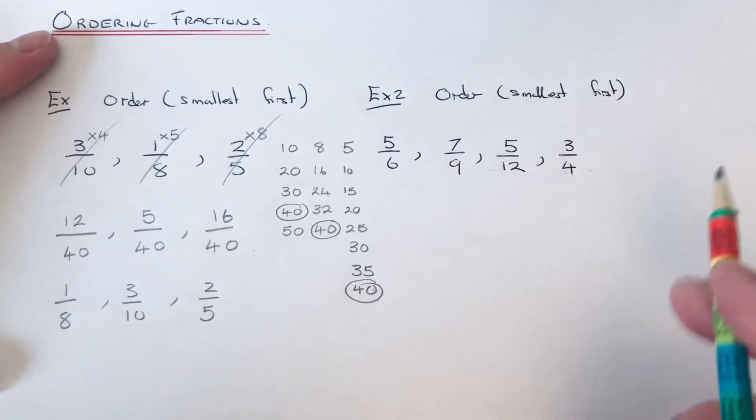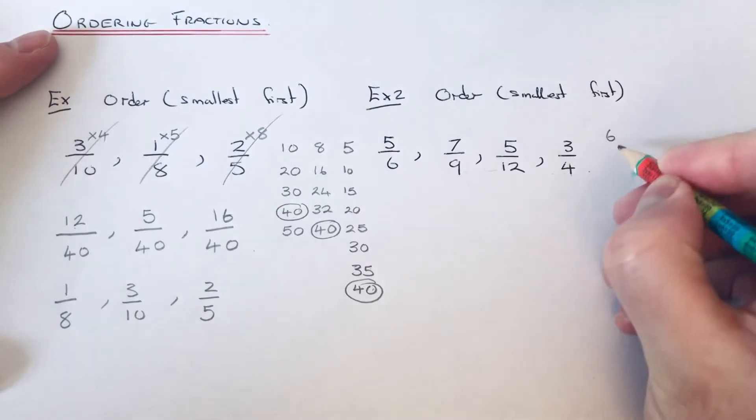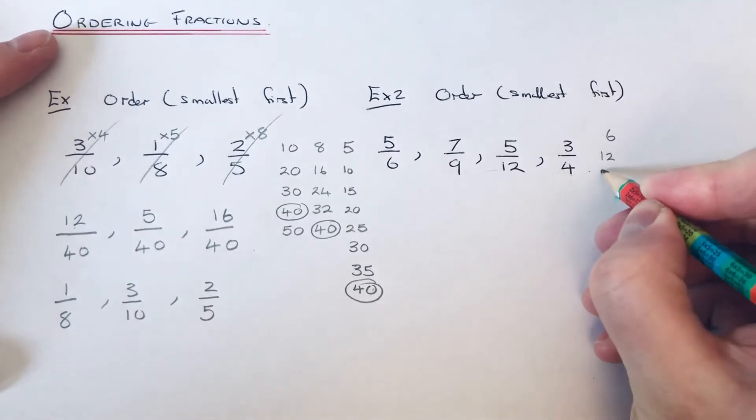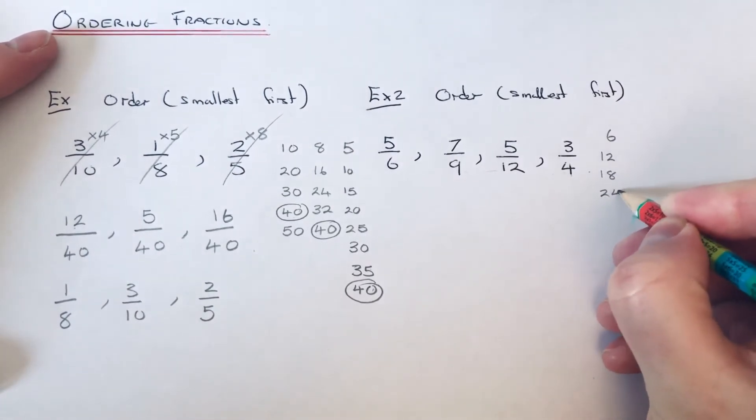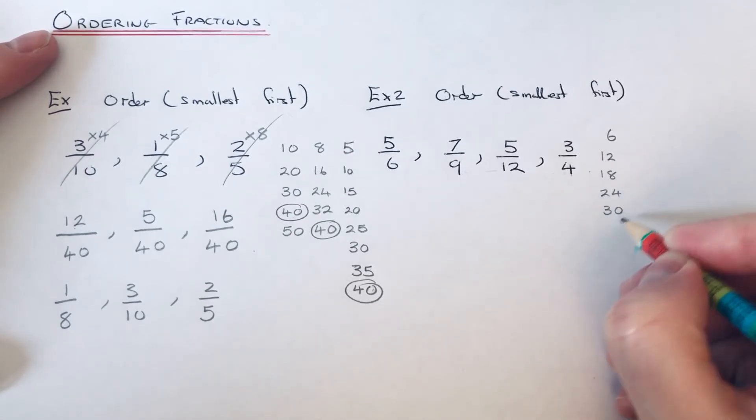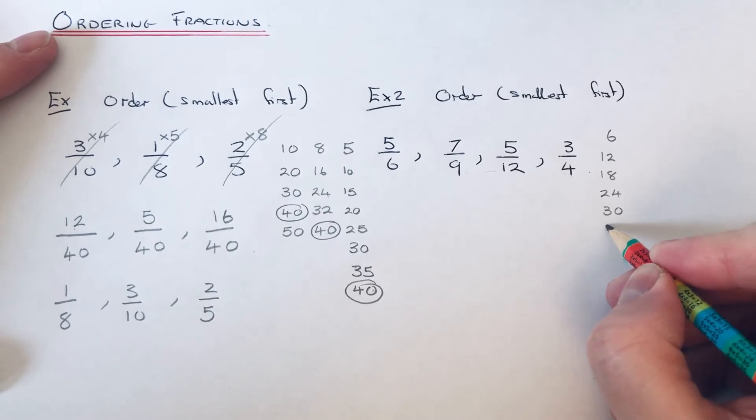Let me start with the 6's. We've got 6, 12, 18, 24, 30. I want to keep going on this one because I'm feeling it's going to be quite big, so I'm going to write down the first 10.